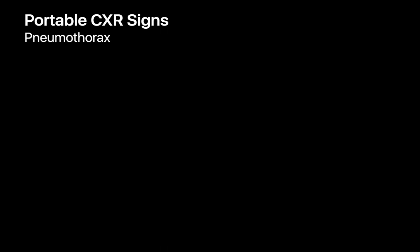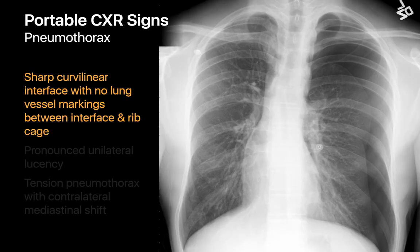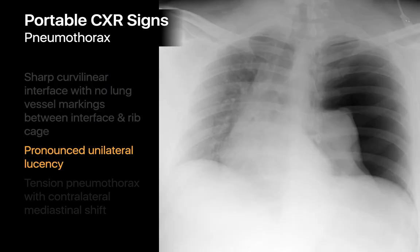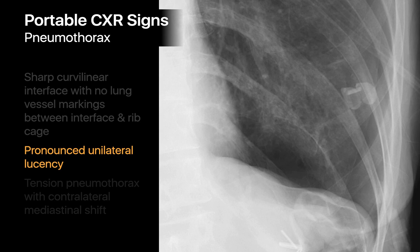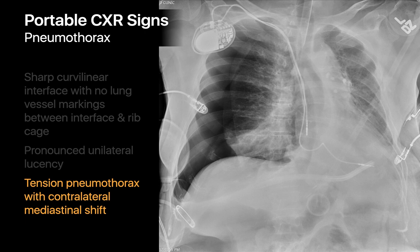We're usually pretty good at picking up pneumothoraces on portable chest x-rays, particularly ones large enough to cause symptoms. Imaging features are typically a sharp curvilinear interface with no lung markings between the interface and the rib cage, and pronounced lucency on one side in a large pneumothorax. In supine patients, the most non-dependent part of the rib cage may be the inferior anterior chest rather than the lung apices, resulting in tougher cases where the pneumothorax is mostly in the lower chest. We always check for contralateral shift of the mediastinum and heart in case the pneumothorax is under tension and needs emergent intervention.